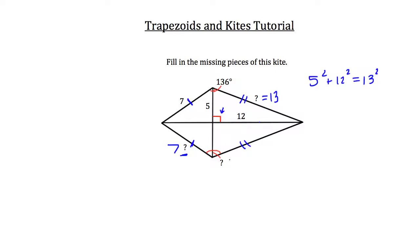So lastly, we're missing this question mark here. Now you know that with a kite, opposite angles are going to be congruent to each other. So if this top angle is 136 degrees, this bottom angle must also be 136 degrees. And that's how you can use your knowledge of kites to solve for missing pieces of kites.